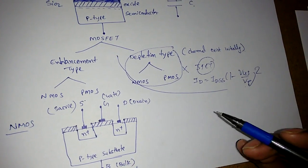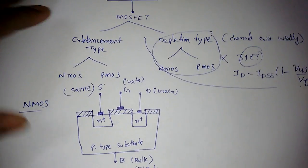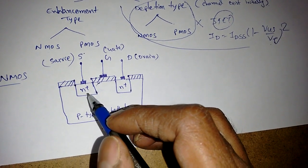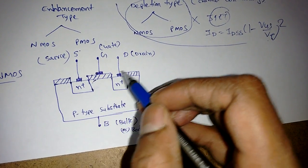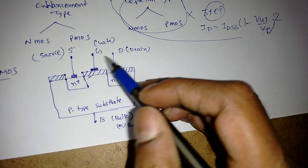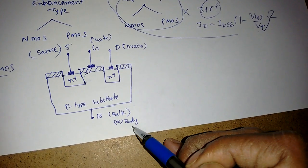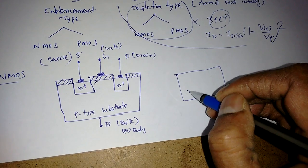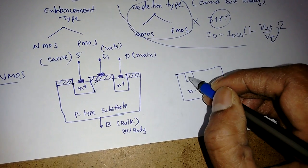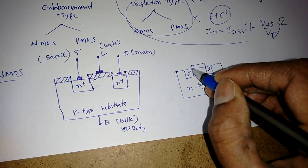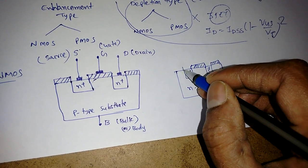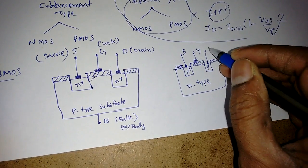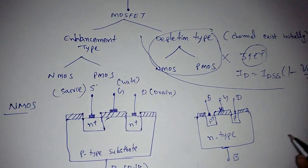For NMOS, the physical structure uses a P-type substrate with two highly doped N+ regions, a metal gate, and an oxide layer — hence metal-oxide-semiconductor. There are four terminals: source, gate, drain, and bulk (also called body). For PMOS, the substrate is N-type and the doped regions are P+. The oxide layer and metal gate are present similarly, with terminals: gate, source, drain, and body B.